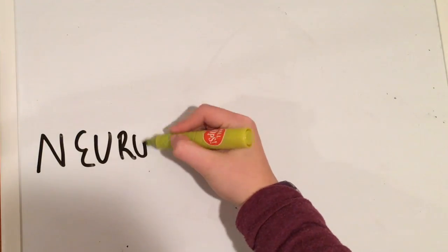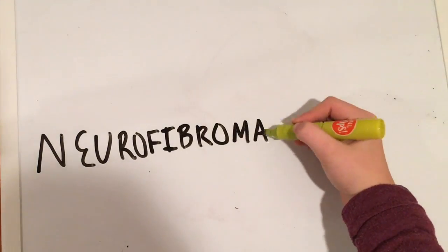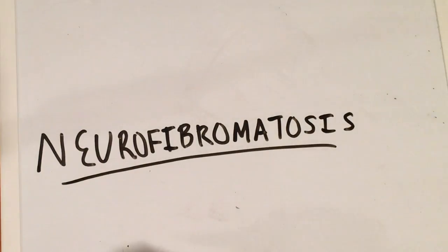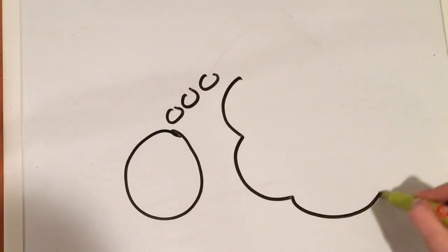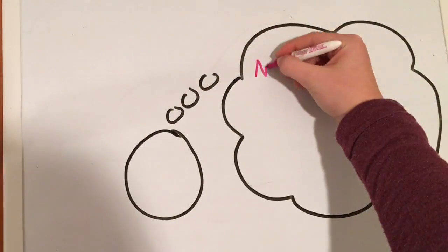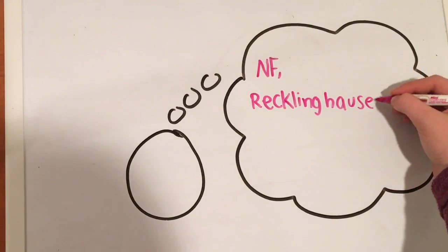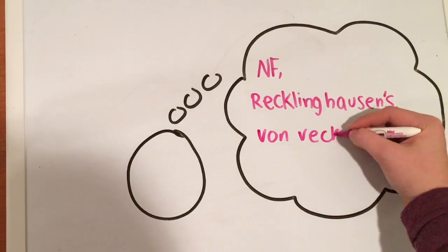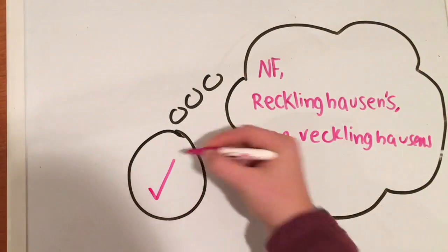So, let's talk about neurofibromatosis. You might know it as NF, Recklinghausen's disease, or von Recklinghausen's disease. These are all right.